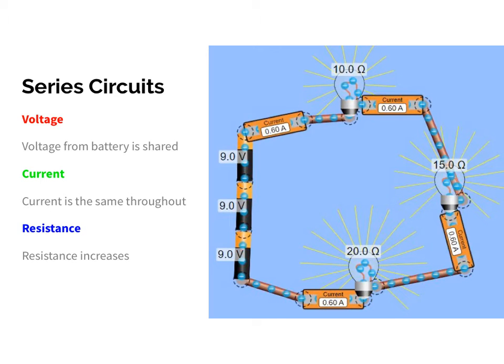Folks, how we doing? We're getting there in terms of electric circuits. In this video lesson, we're going to look at the different ways in which we can arrange the components within our circuits. You should have done a little lab activity looking at the two types: what are called series and parallel circuits.